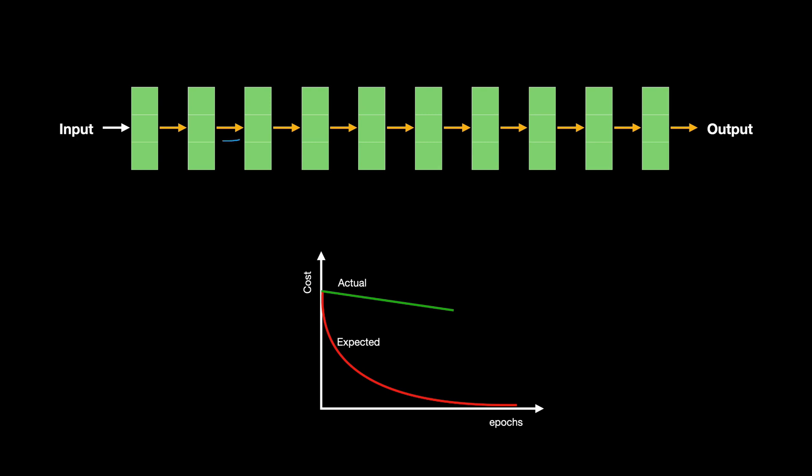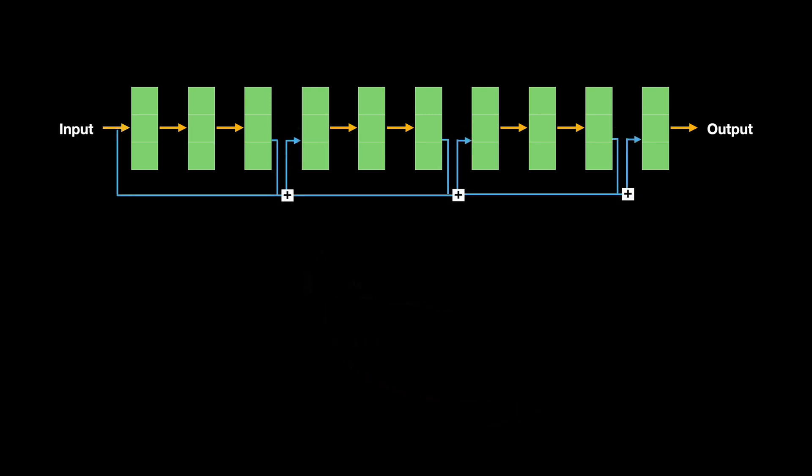Instead of having this long pathway highlighted in the yellow line, what if we had kind of a shortcut pathway for all these layers to get better access to the input? That's exactly what residual connections do. Instead of having a single pathway for information flow, residual connections add another shortcut pathway to pass the input to later layers. Now the input information will flow in two pathways: one is this longer pathway highlighted in yellow and the other is this shorter pathway highlighted in blue.